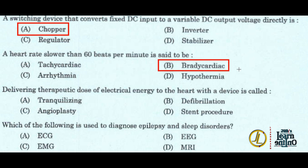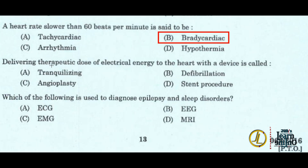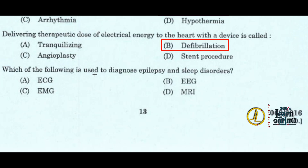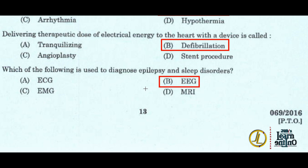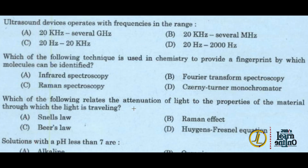Next: delivering a therapeutic dose of electrical energy to the heart with a device is called defibrillation — option B. Next: which of the following is used to diagnose epilepsy and sleep disorders? Option B, EEG (electroencephalogram).